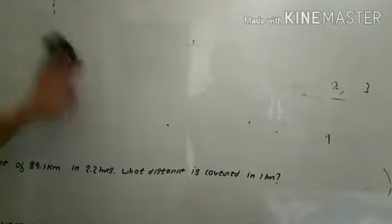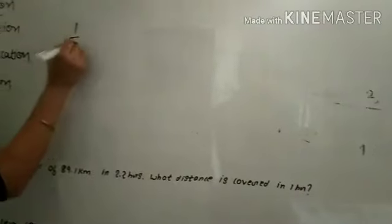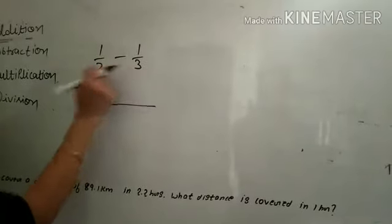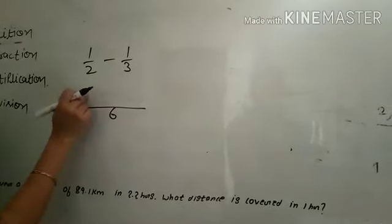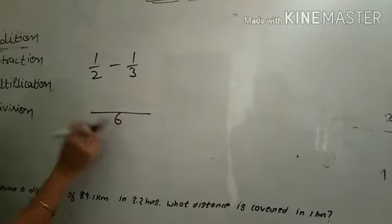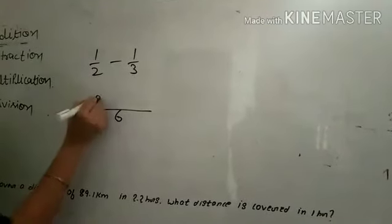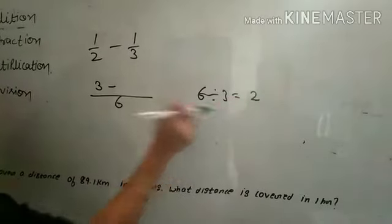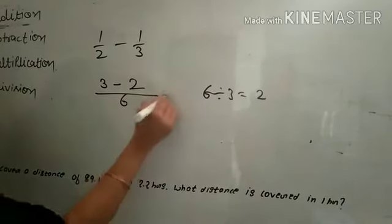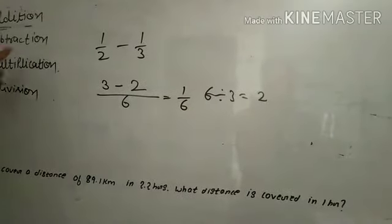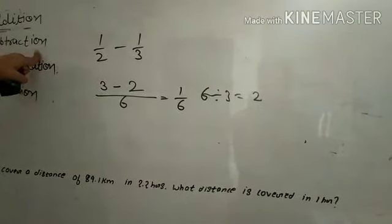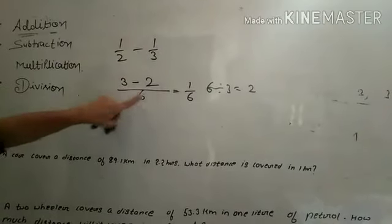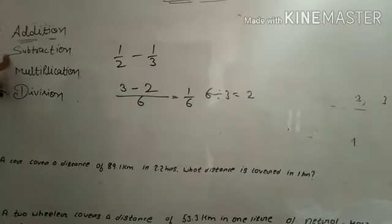For subtraction, a fraction is given: for example 1 by 2 minus 1 by 3. The method is the same - only the plus sign becomes a minus sign. The LCM of 3 and 2 is 6. Divide 6 by denominator 3 to get 2, multiply by numerator 1 to get 2. Divide 6 by denominator 2 to get 3, multiply by numerator 1 to get 3. So the answer is 2 minus 3... that is 1 by 6. Any question based on this depends on finding the LCM, then dividing by denominator and multiplying by numerator.